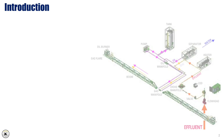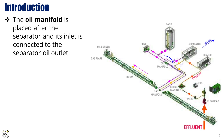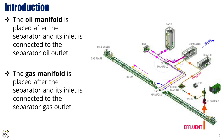The oil manifold is positioned downstream of the separator, with its inlet line directly connected to the separator's oil outlet. It serves to collect and distribute the separated oil for further processing, storage, or measurement. Similarly, the gas manifold is installed after the separator, with its inlet connected to the separator's gas outlet. It is responsible for managing the flow of separated gas, allowing it to be routed toward flaring.